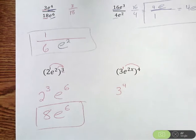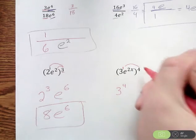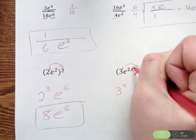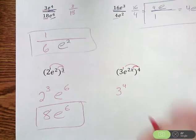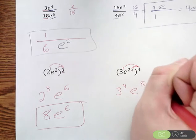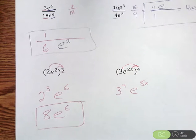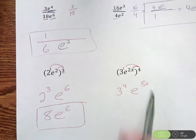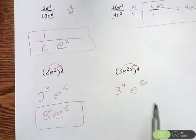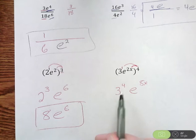So 4 times 1 is 4. We're going to have 3 to the fourth power. Then we're going to take this 4 and multiply it by this 2x here. 4 times 2x is 8x. So what we have there is 3 to the fourth e to the 8x.